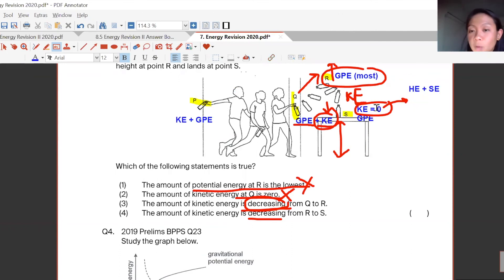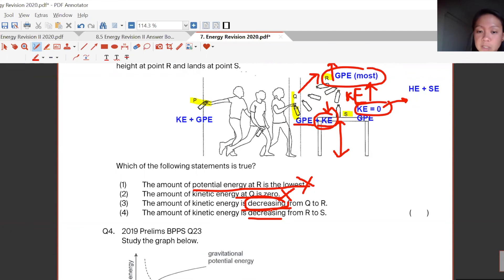So that's the reason why my KE becomes zero, even though my KE increases as it comes downwards. This is wrong. Decreasing is wrong. It's supposed to be decreasing from Q to R but increasing from R to S.